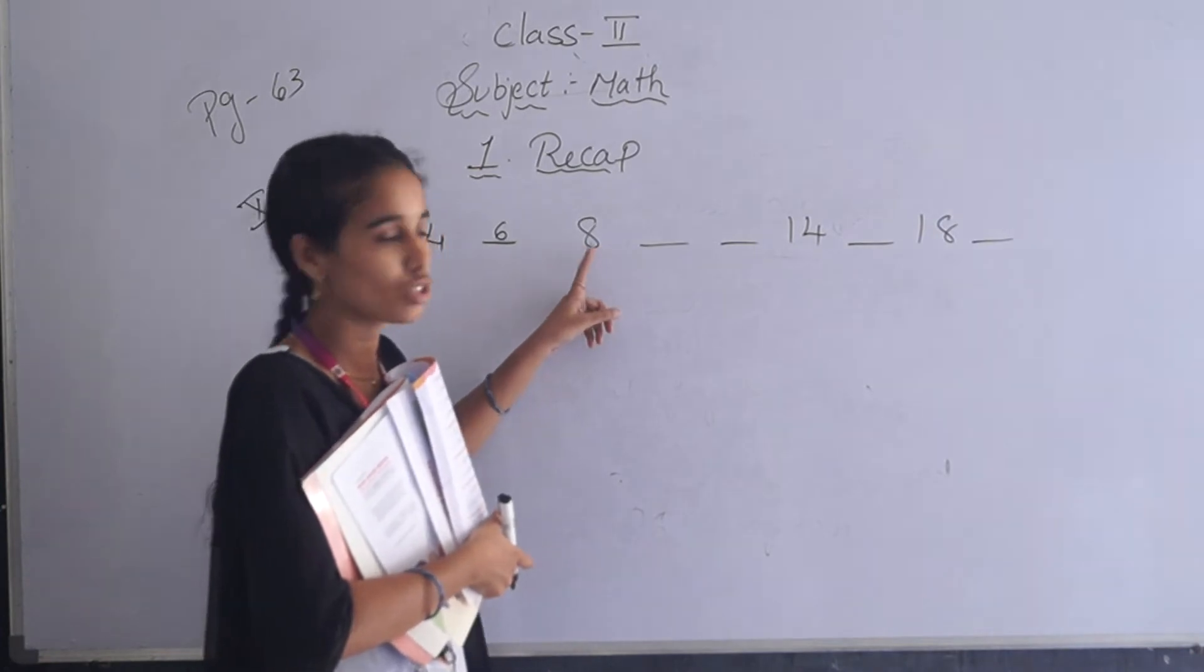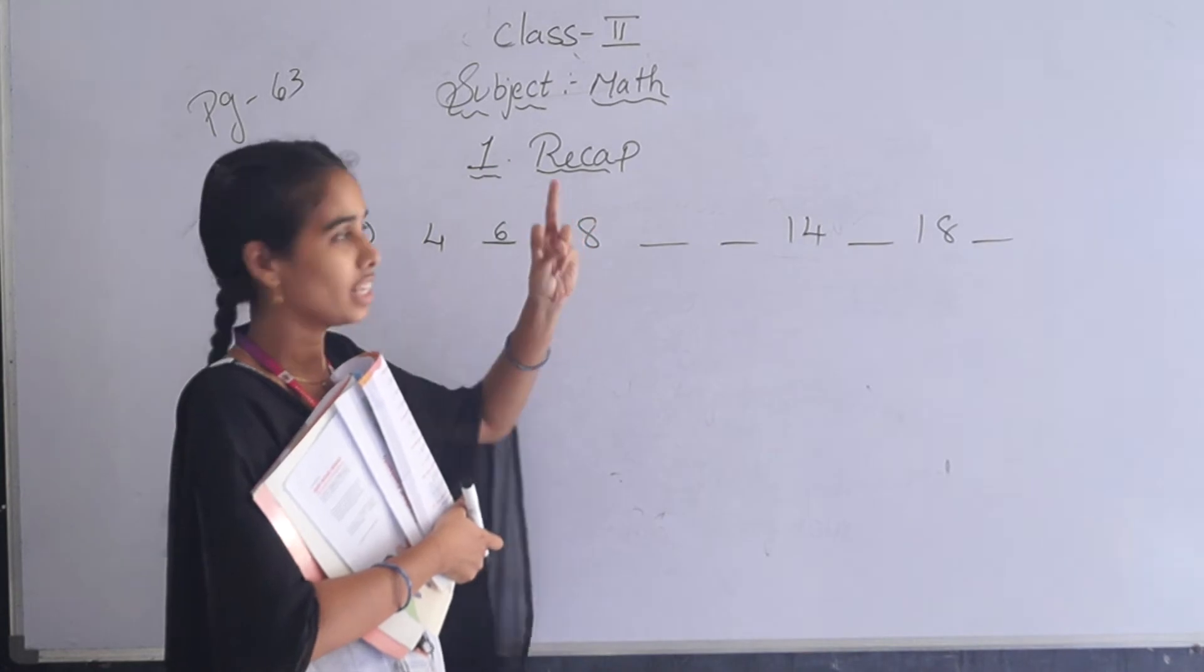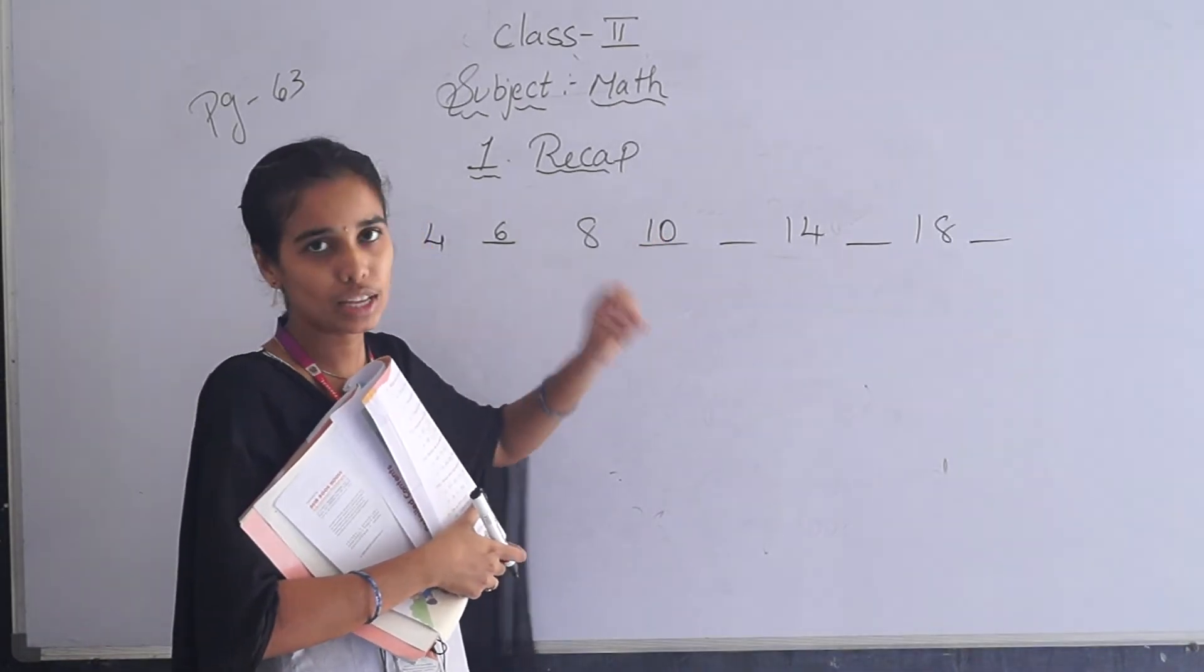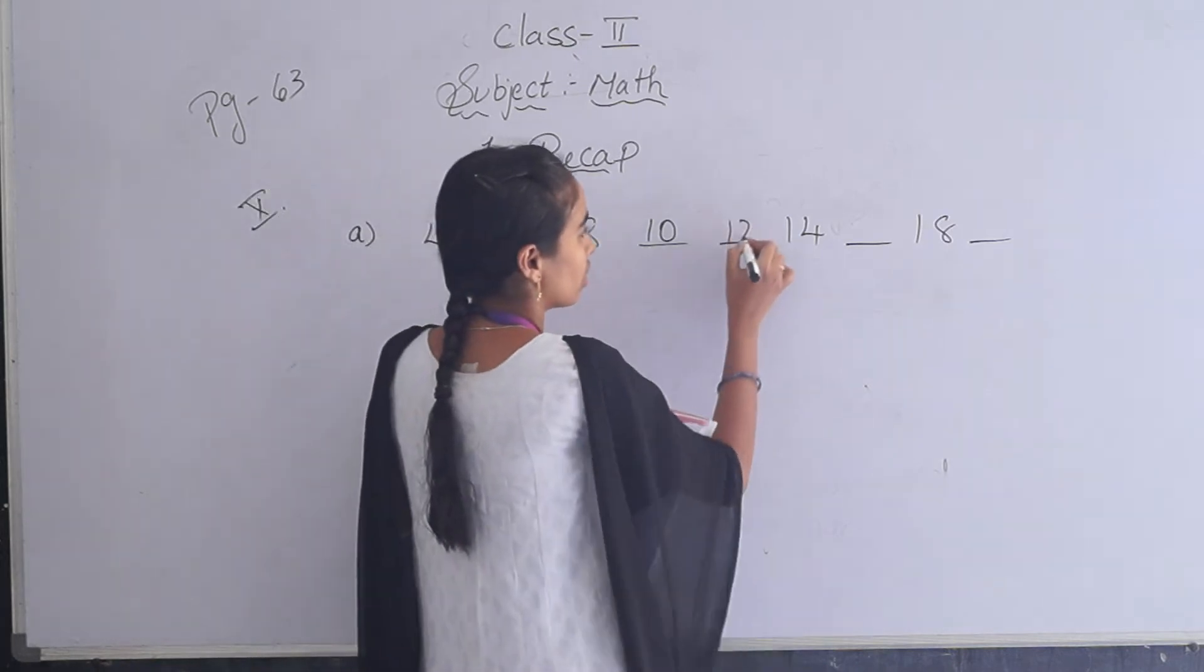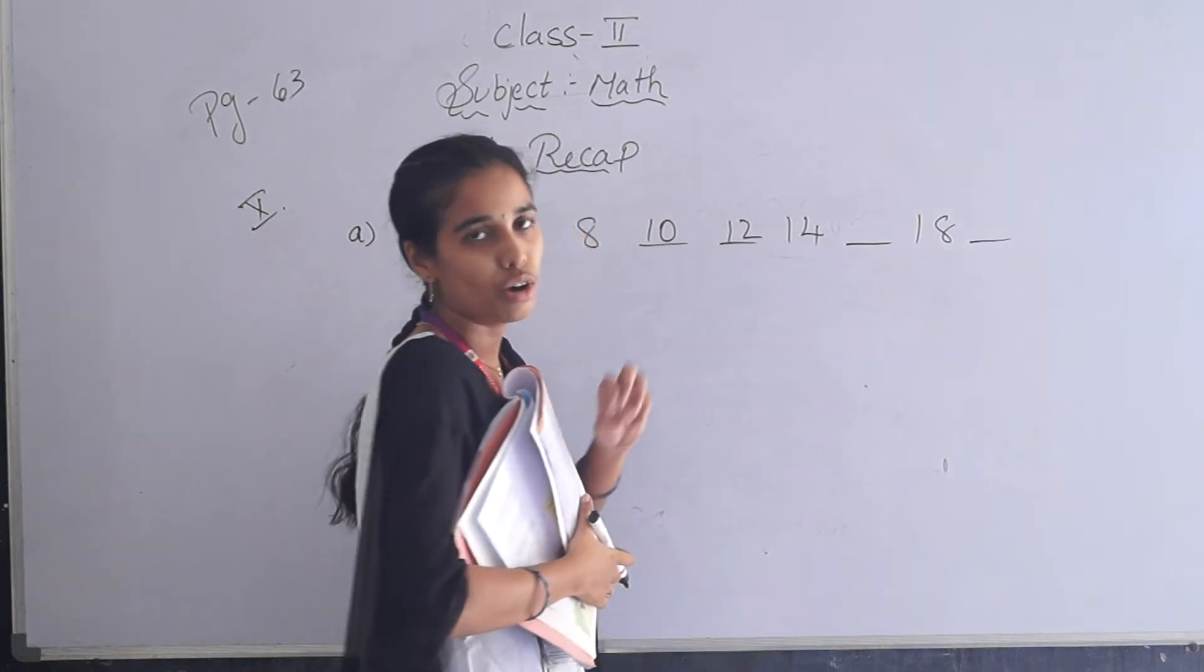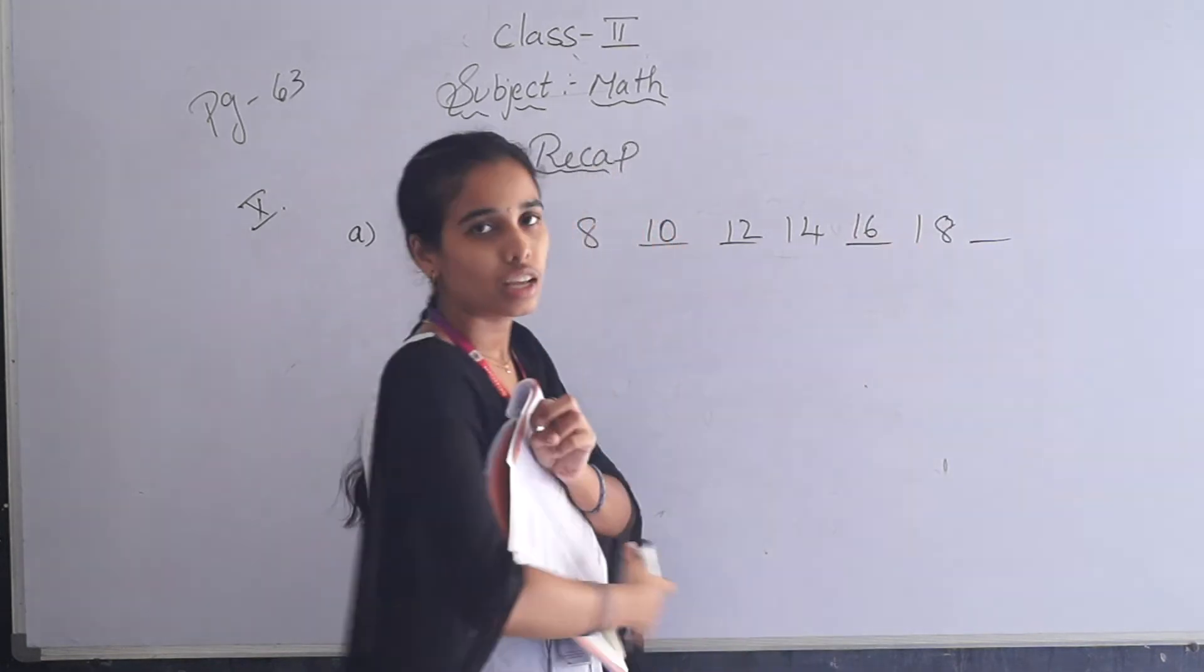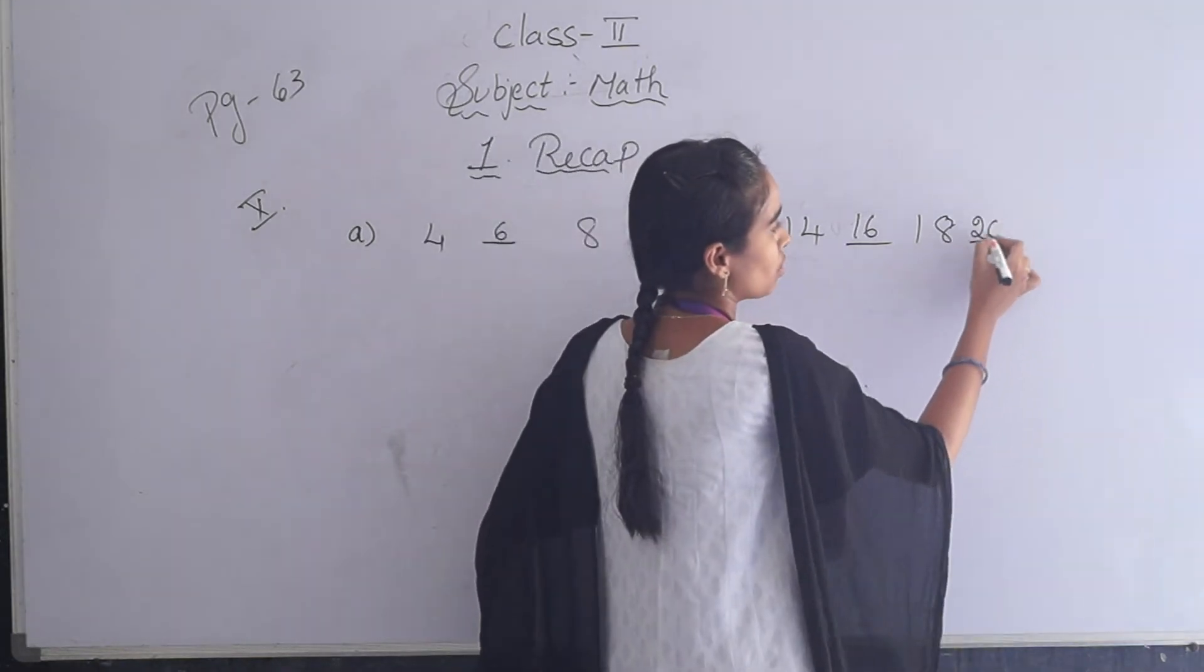Next, here we are having 8. You have to add 2 to this number. 8 plus 2 is 9 and 10. Add 2 to this number. 10 plus 2 is 11, 12. 12 plus 2 is 14, already they gave in. So add 2 to this number. 14 plus 2 is 15, 16. 16 plus 2 is 18. So 18 plus again 2 you have to add, that is 20.